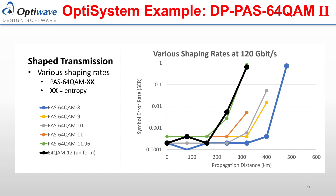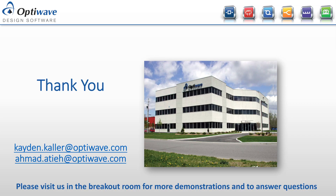Here are some results of the symbol error rate as a function of propagation distance at different shaping rates. The bit rate was kept constant at 120 Gbps and the results plotted on a log scale. Increasing the shaping rate, which decreases the entropy of the signal, allows for an increased reach of the system. This is exemplified by the uniform 64QAM system in black and the shaped system with an entropy of 8 in blue, where the shaped signal is able to reach further distances. A system with further reach using higher bit rates can be designed using additional techniques such as changing the roll-off factor of the pulse generator, using Raman amplifiers, or implementing pre-equalization. Thank you for listening to this presentation. Please visit us in the breakout room for more demonstrations and to answer questions.